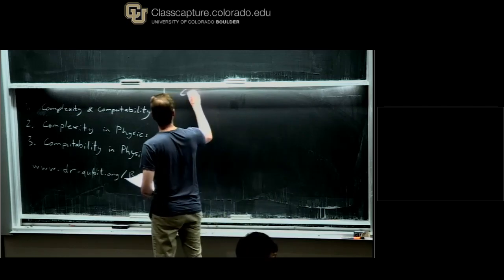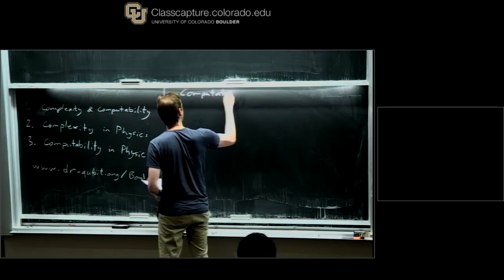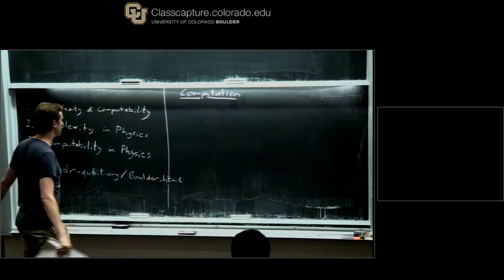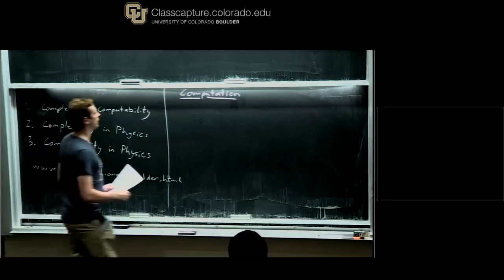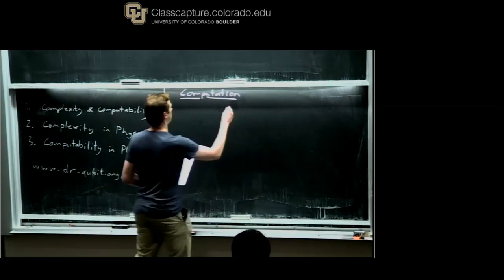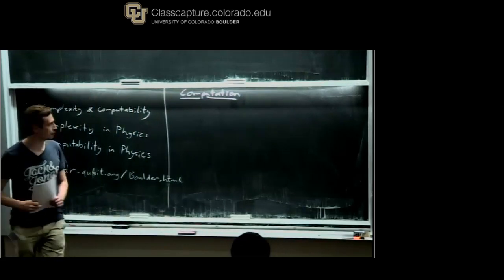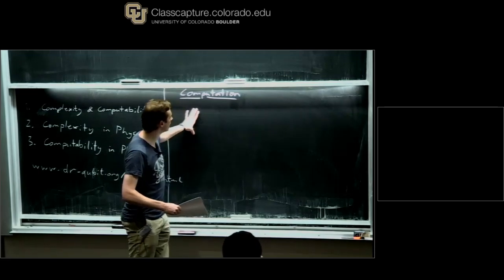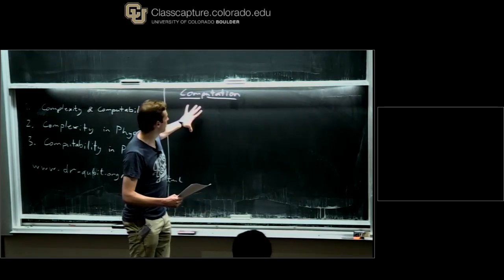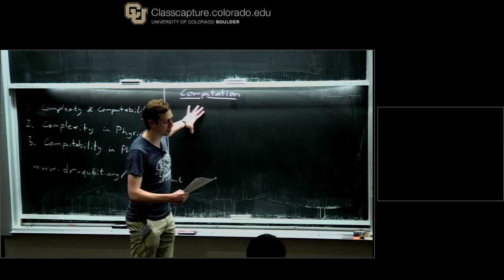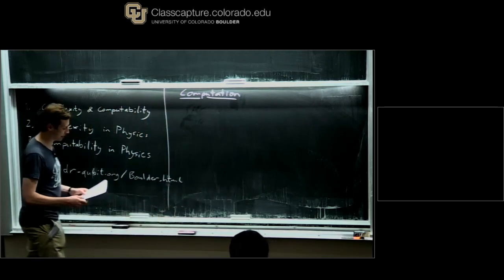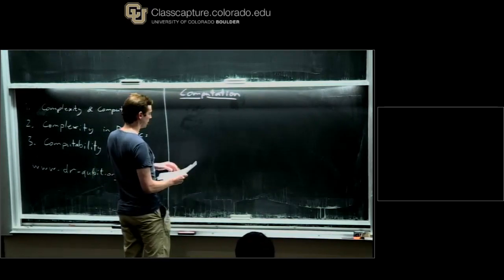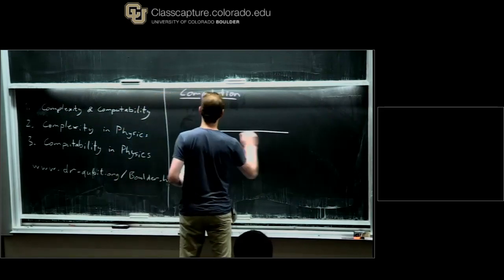Let's start with talking about computation. The first thing we need in order to understand anything about complexity theory and computability is what it means to compute. And this is not so obvious. It took until — in some sense Euclid, the ancient Greeks already had some notion of what it meant to compute — but it took until 1936 and Alan Turing to pin down precisely what it means to compute, at least the definition that's now the one that everyone accepts. Let's start by discussing what Turing's model of computation was.